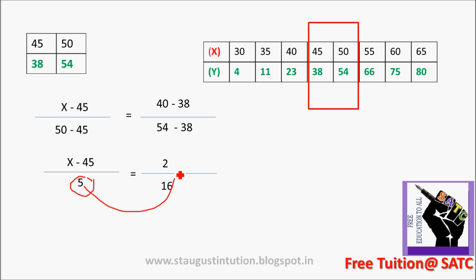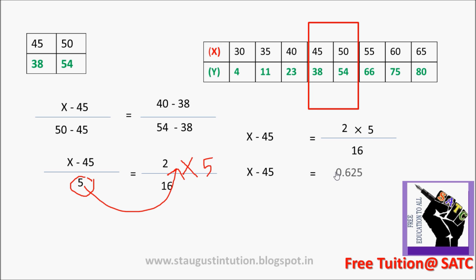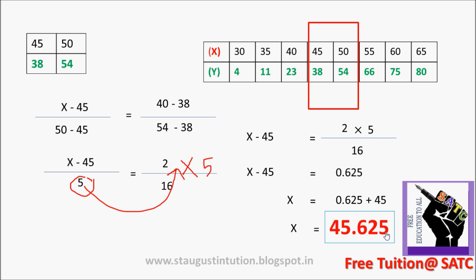41 minus 38 equals 95 minus 38. This is equal to 1 minus 38, 3 minus 4 minus 38, equal to 2x5 divided by 16. This is 10 divided by 16, which is 0.625. This is x — the median — minus 45. This is equal to 0.625 plus 45, which is 45.625. This is the answer.